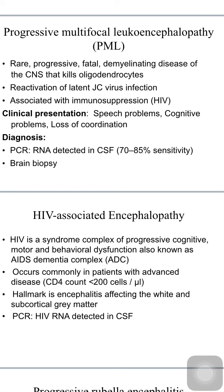HIV-associated encephalopathy, also known as AIDS dementia complex, is commonly seen when the CD4 count is less than 200 cells per microliter. There is encephalitis affecting the white matter and the subcortical gray matter. Diagnosis is by detection of HIV RNA in the CSF.